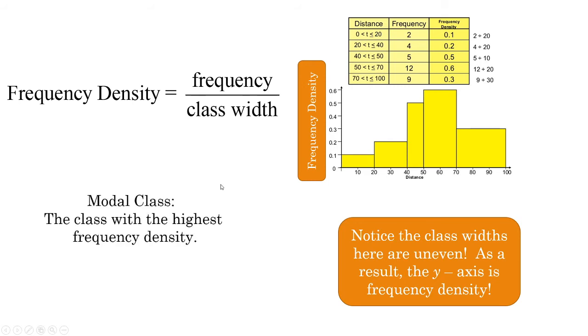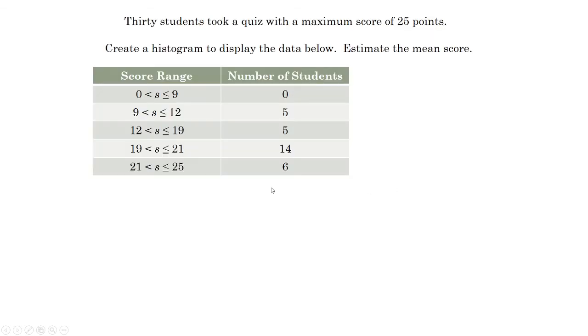Now if you're asked for the modal class, which is similar to mode, it's not going to be the highest frequency, that's going to be the highest frequency density. And the reason that is, you might have a class width that's super long, like say 20, and you might have another one that's really short, say 5. If that 5 has a higher density of frequency than that class width of 20, well then the modal class will be that class with the highest frequency density, because they're having the most occurrences of frequency for the width.